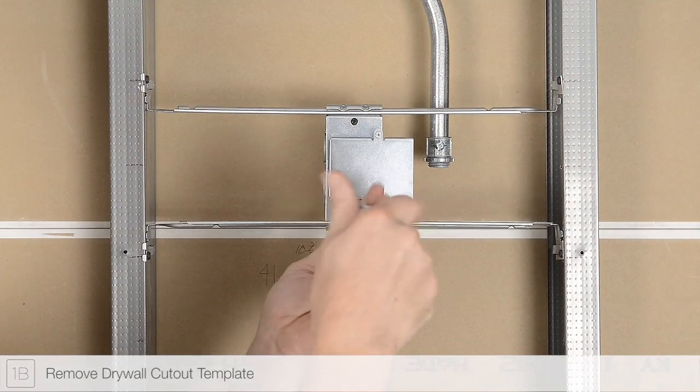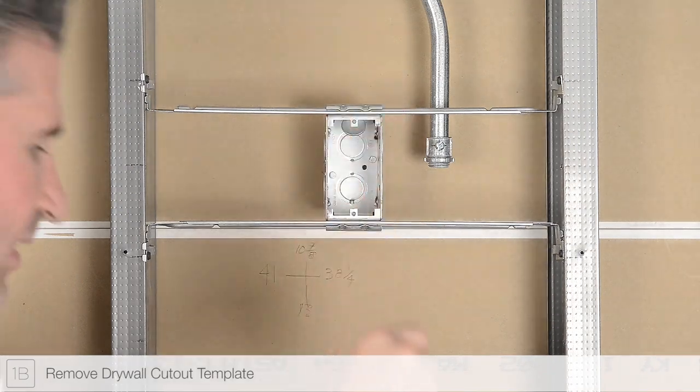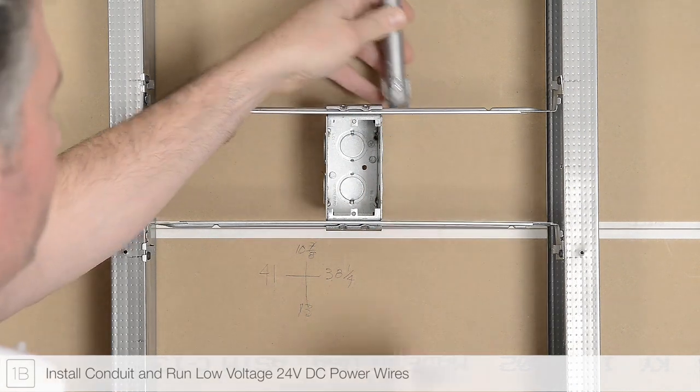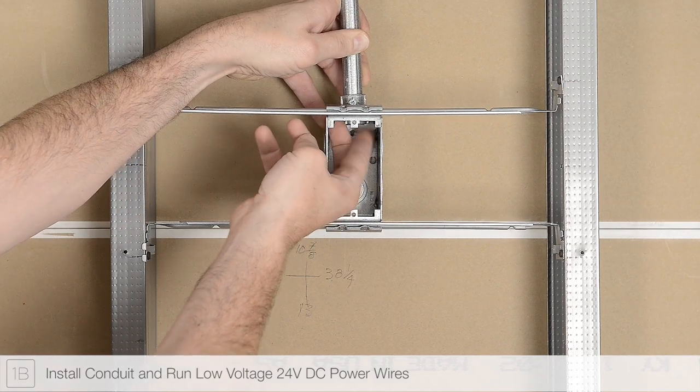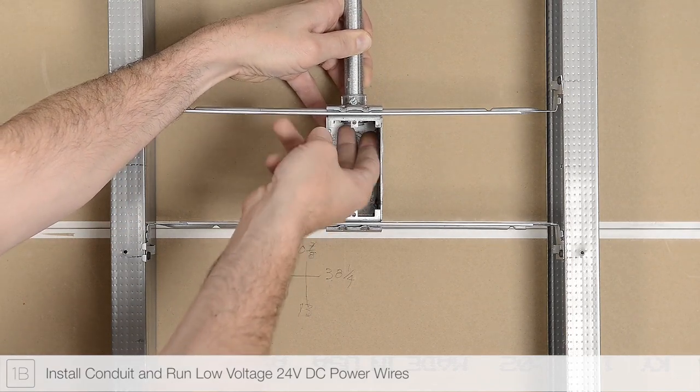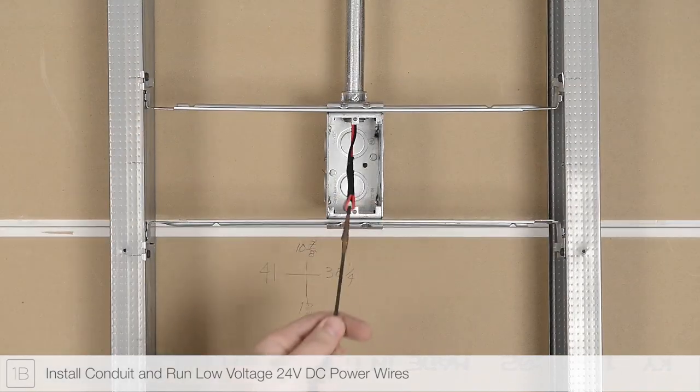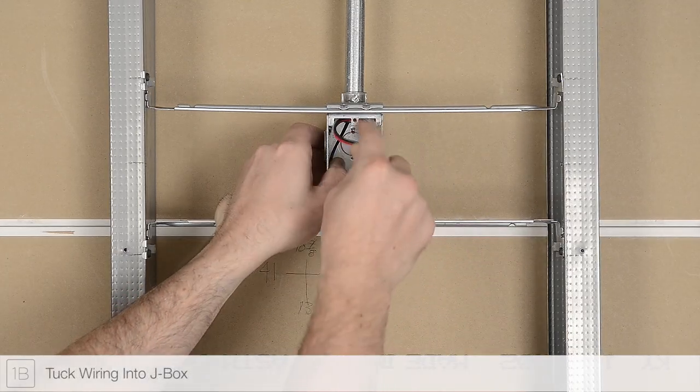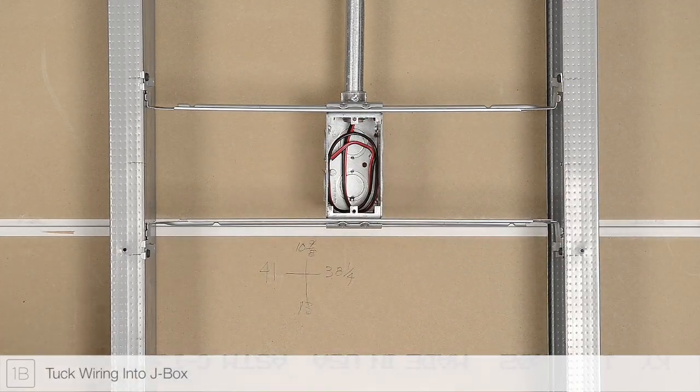Remove the drywall cutout template from the junction box. Remove a knockout from the power feed junction box and, if required by your local electrical code, install conduit. Route the low-voltage power wires from the remote power supply to the power feed junction box.